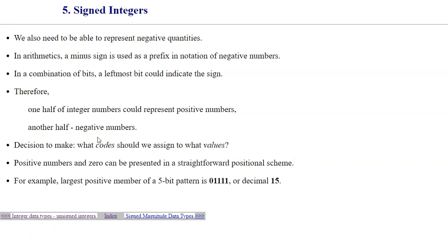Signed integers represent both positive and negative and zero quantities. Of course, we use a minus sign as a prefix in notation of negative numbers in conventional arithmetic. However, if we are constrained by the data type of some sort, whether it being 8-bit, 16-bit, or 32-bit, and so forth, we have to divide roughly the entire space of unique combinations into two halves.